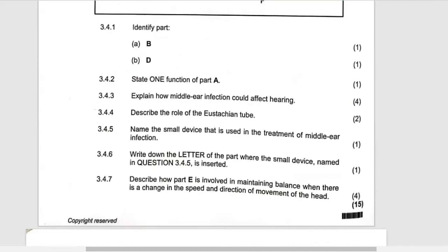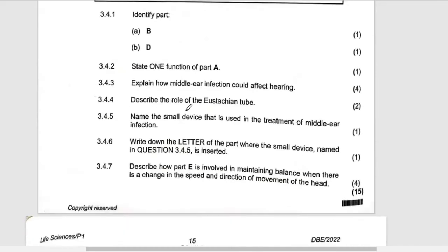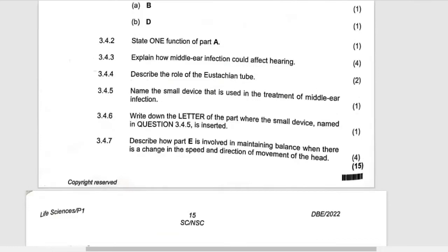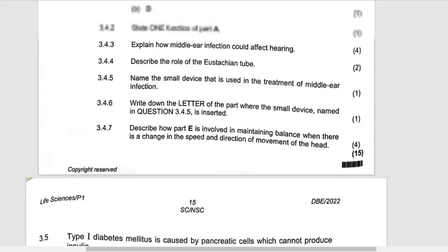I've skipped one question. Describe the role of eustachian tube. Remember the eustachian tube connects to the mouth. The function of the eustachian tube is to equalize the pressure on either side of the tympanic membrane.